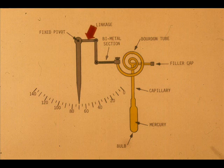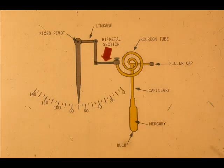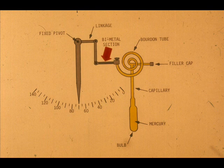The increased volume causes the Borden tube to unwind. The indicator, connected by the linkage, moves an amount proportional to the temperature increase at the bulb. Notice the bimetallic section of the linkage. This is to compensate for ambient temperature changes in the case, which would affect the Borden tube and cause an error in the readout.